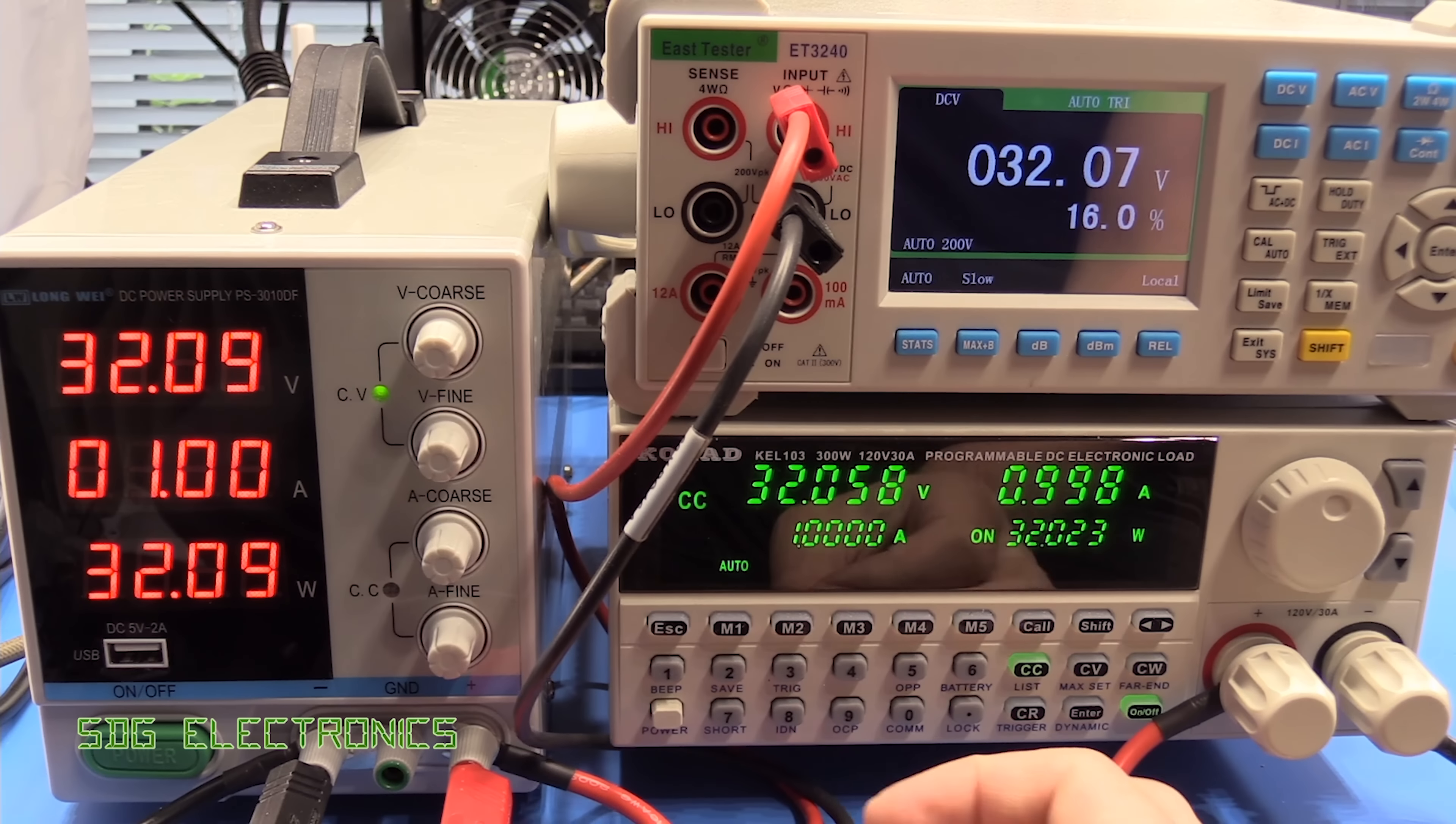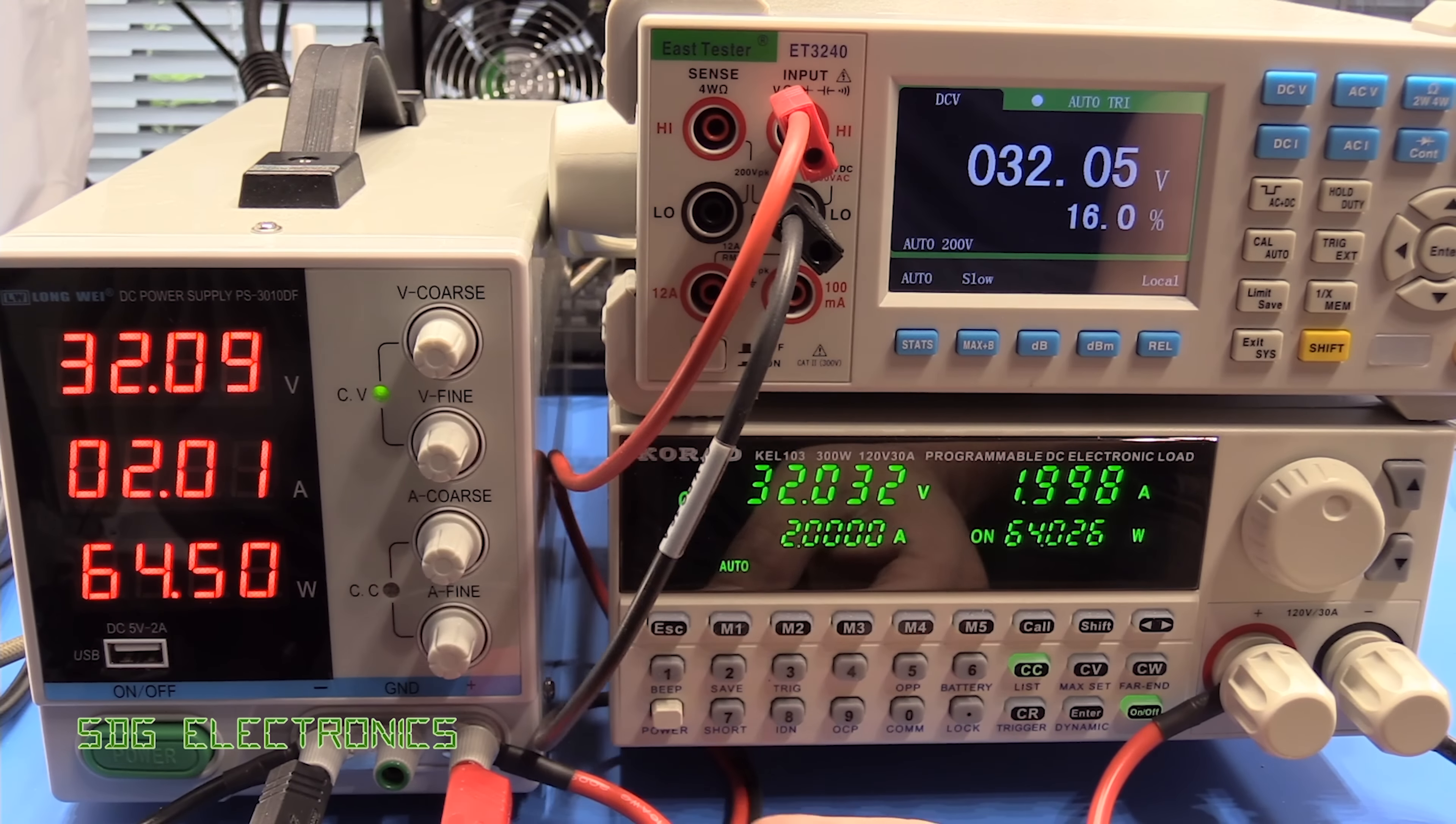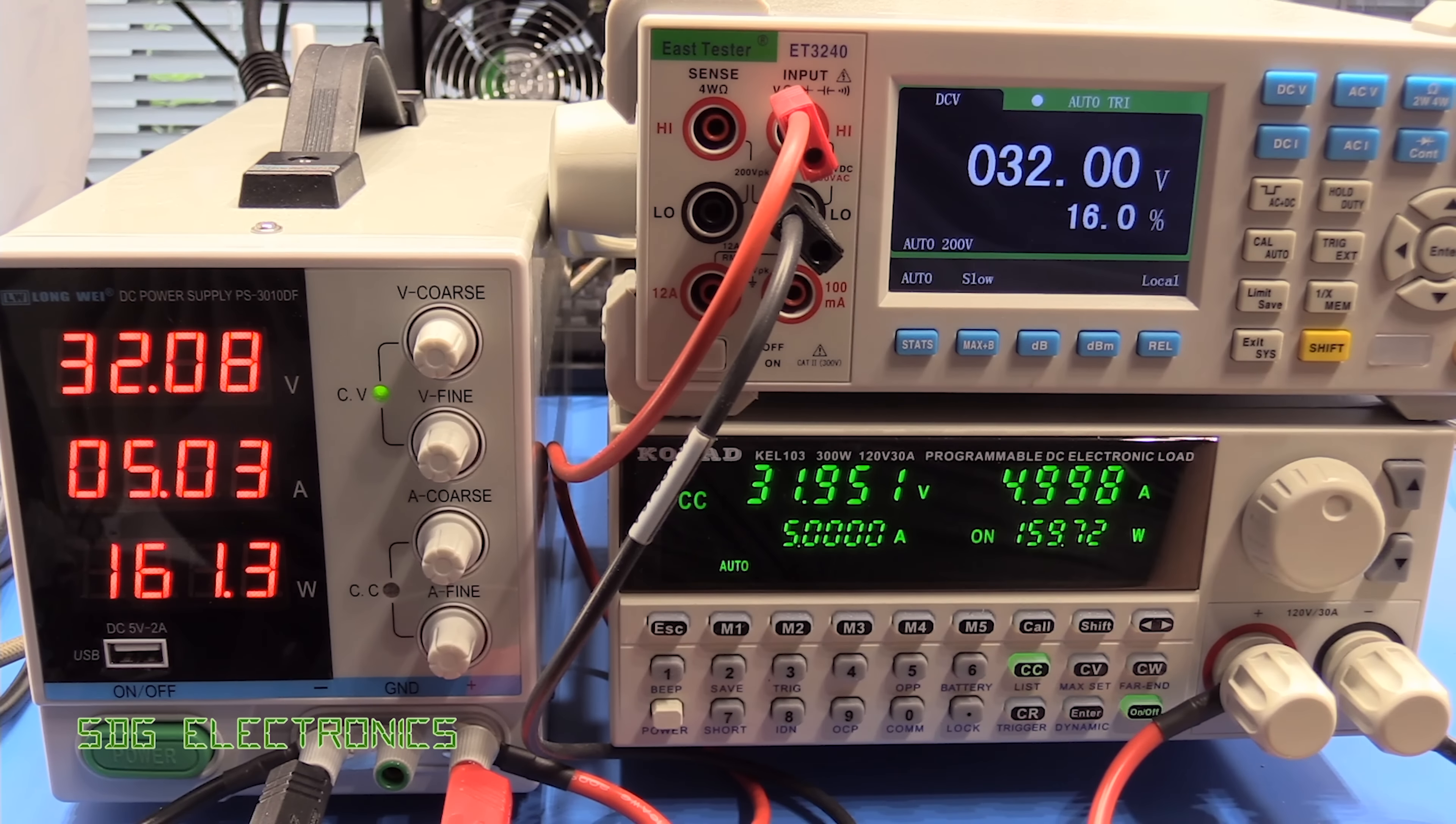Let's turn up the load slightly. Let's set it to two amps, so 64 watts. Again, no real problem, it's just dropped very slightly, but two amps, absolutely fine. Let's try it at five amps, so 160 watts.